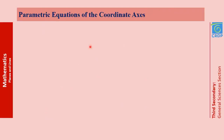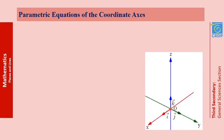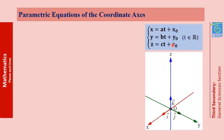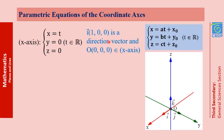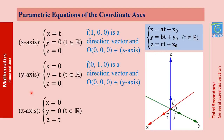Now let's look at special cases: the equations of the coordinate axes — the x-axis, y-axis, and z-axis. Using the general parametric system and identifying the direction vector and a point on each axis: the x-axis passes through O with direction vector I = (1, 0, 0), giving x = t, y = 0, z = 0. Similarly, we find parametric equations for the y-axis and z-axis by the same method.